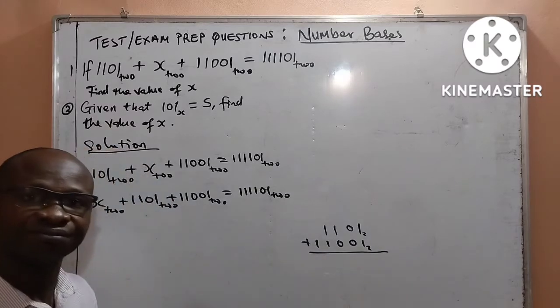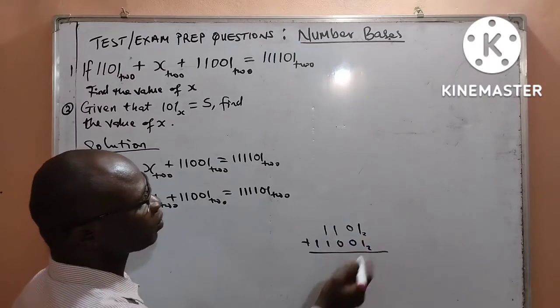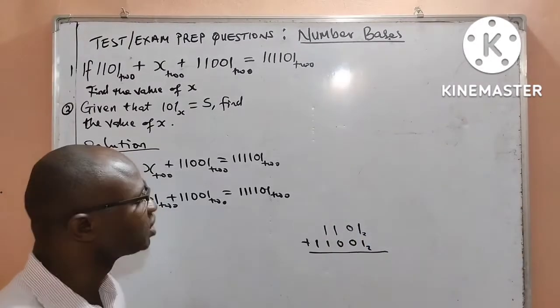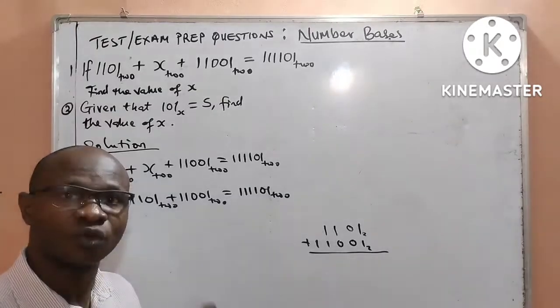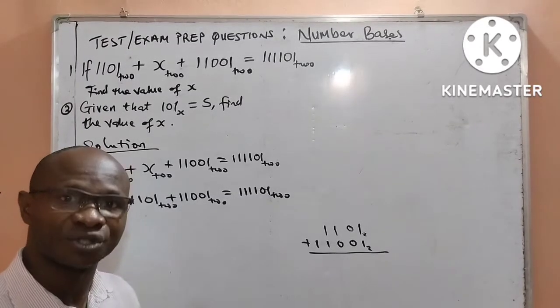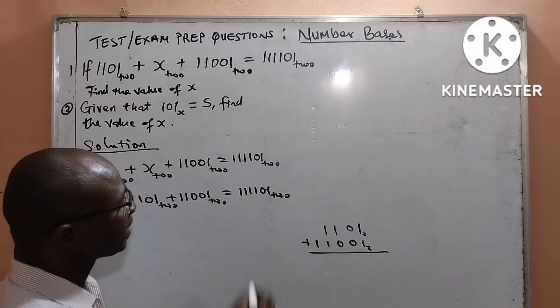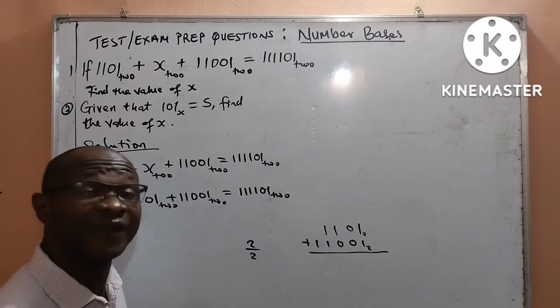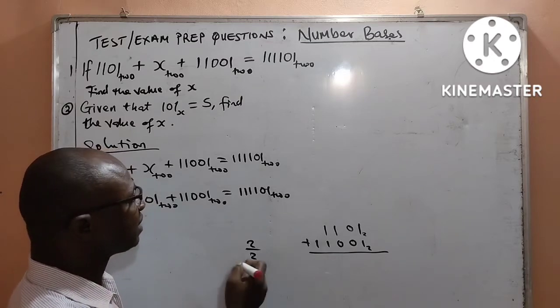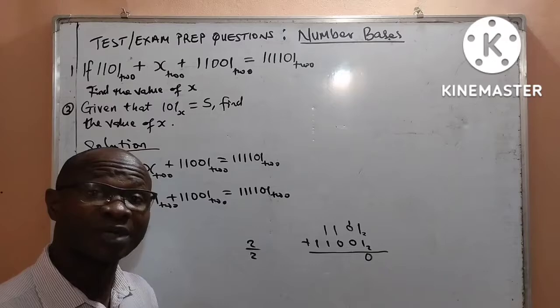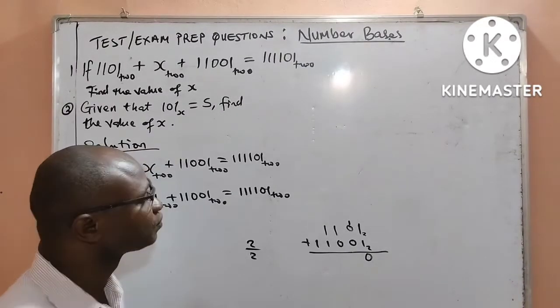Alright, let us add it. 1 plus 1, we give it 2. But in binary numbers, we don't have digits more than 1. We have only 0s and 1s. They are the only digits we have in binary numbers. Therefore, if I get 2, I am going to divide it by 2. And when I divide 2 by 2, I will get 1 remainder 0. I will put down the remainder, which is 0.